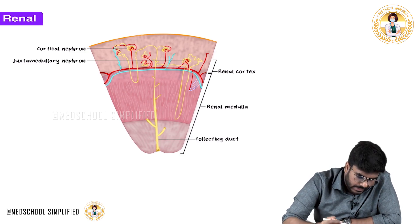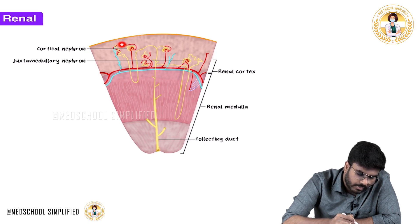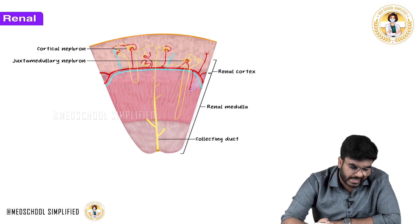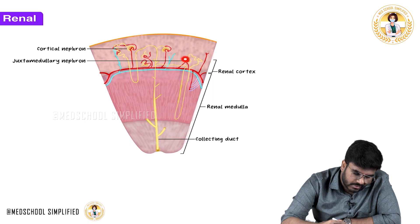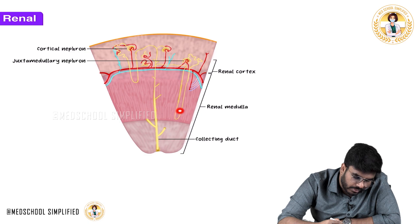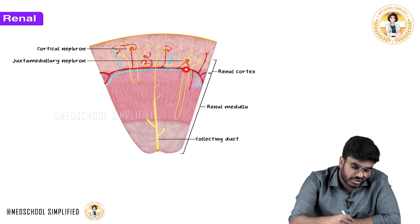Looking at the two types: the cortical nephron has its Bowman's capsule, proximal convoluted tubule, most of the loop of Henle, and distal convoluted tubule all present in the cortex. So most of the nephron is in the cortex — these are cortical nephrons, making up 85% of nephrons, and they mainly form urine. Cortical nephrons have a short loop of Henle.